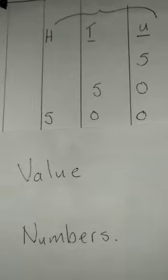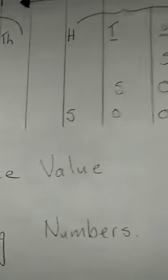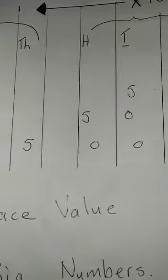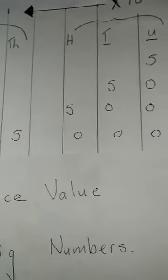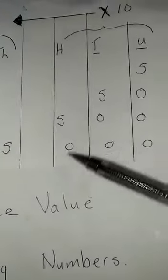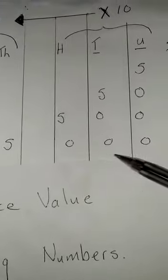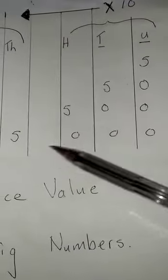Now we get to a slightly bigger number and we see this number here. This number right across there is five thousand.